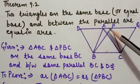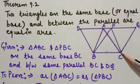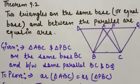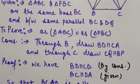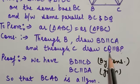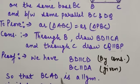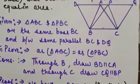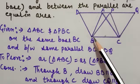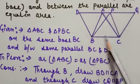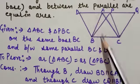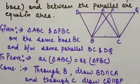For construction: through point B, draw BD parallel to AC; through point C, draw CQ parallel to PB. Now both are parallelograms. Given: two triangles are to be proved equal in area. By construction we draw lines parallel to the given sides. So BD ∥ CA and BC ∥ DA, making BCAD a parallelogram. Similarly, BCQP is also a parallelogram.